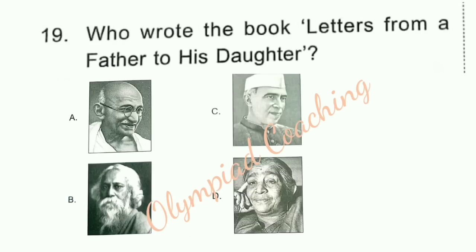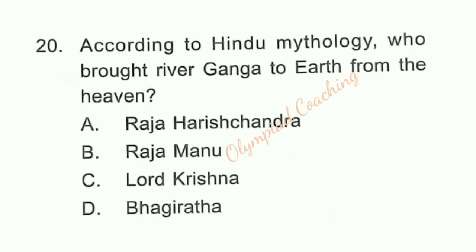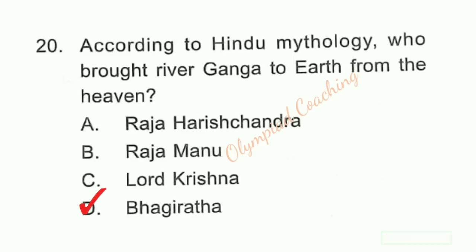Question number 19: Who wrote the book 'Letters from a Father to His Daughter'? Option C is correct. The father is Pandit Jawaharlal Nehru and the daughter is Indira Nehru. Question number 20: According to Hindu mythology, who brought river Ganga to earth from heaven? Option D is correct — Bhagiratha brought river Ganga to earth.